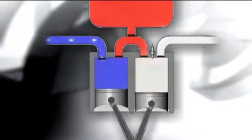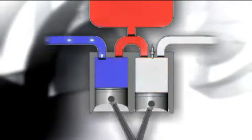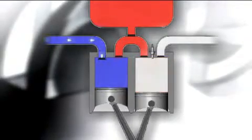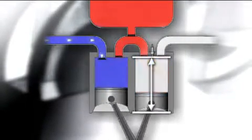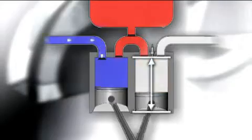With the configuration of the Scuderi engine, we're able to do things that are either very difficult to do in a conventional engine or require additional equipment. For example, a Miller effect, which allows you to extract more energy out of the expanding gases, is easily accomplished in our engine simply by increasing the stroke of our combustion cylinder.